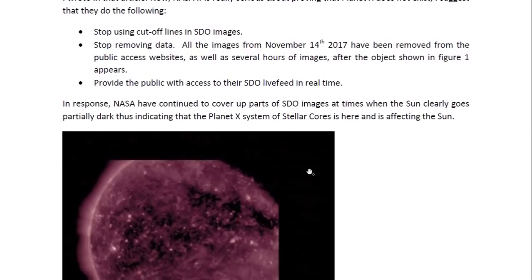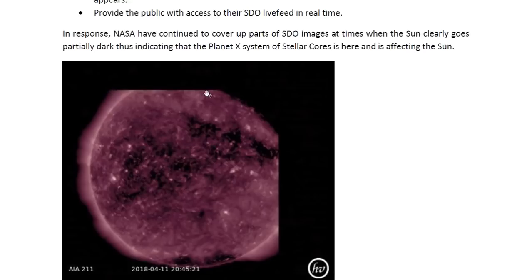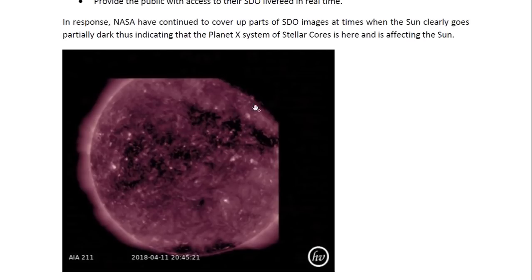Now in response, NASA has continued to do what they have been doing for many years, and that is use cutoff lines by covering up part of the sun in these SDO images, obviously going to this extra effort to cover up whatever object was there to be seen. And we can see in this image that the sun is clearly going dark, because we can see that the interface between the darkness and the part of the sun that's emitting light is not a smooth straight line.